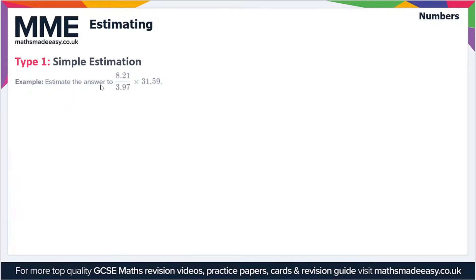In this example, we have to estimate the answer to 8.21 over 3.97 times 31.59. Now if you were to do this calculation manually, this would take ages, especially without a calculator. So what we're going to do is just round these numbers to an appropriate degree that's going to give us a rough answer.